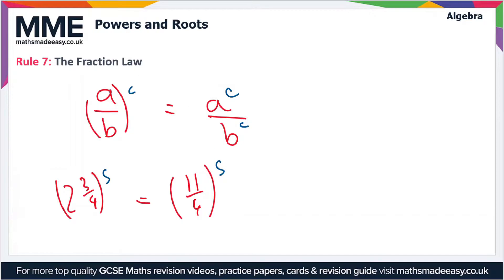So let's rewrite this expression as 11 over four to the power five. And now we can use the fraction law. So this is going to be equal to 11 to the power five over four to the power five. Like I say, this applies to any fraction.